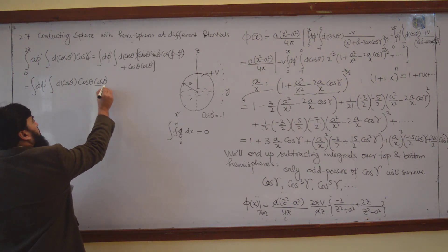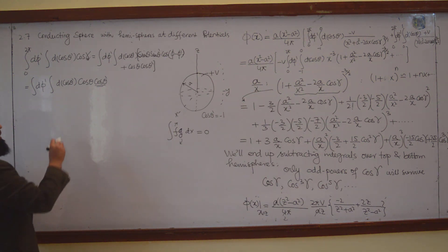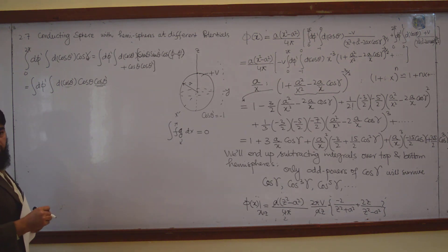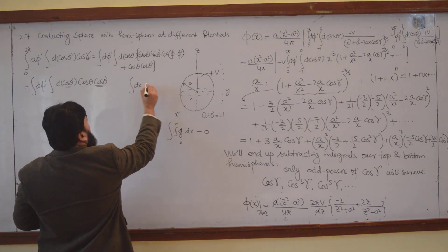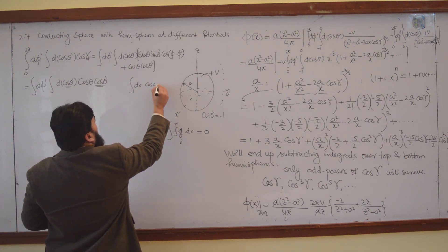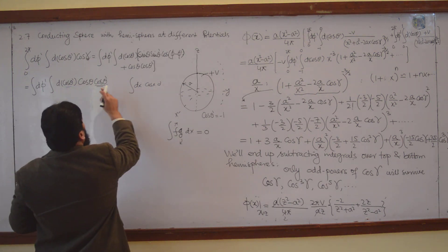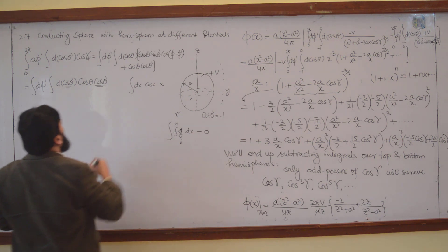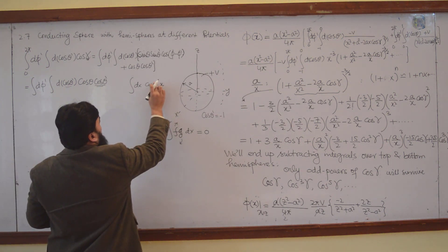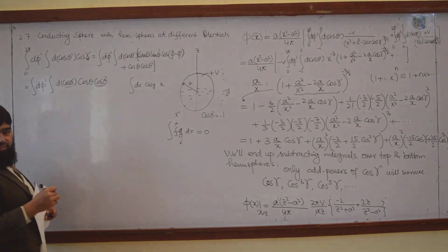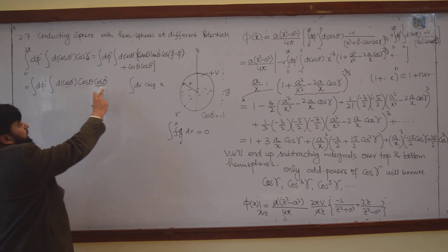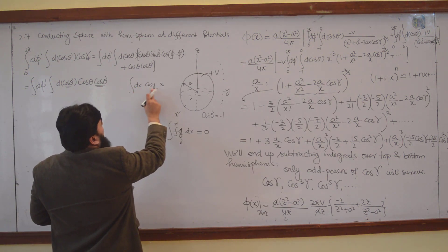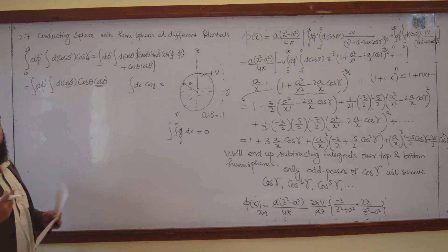Now here, this is an over-variable — cos θ' as a whole is the over-variable. So this is just like the integral dx and then cos x. Here dx corresponds to d(cos θ'), so this is x. I will write it as y to avoid confusion, because cos θ is not a variable here — the variable is θ'.